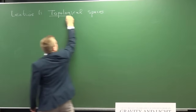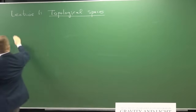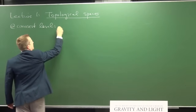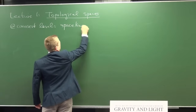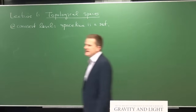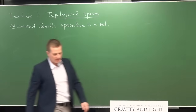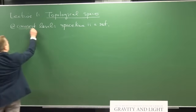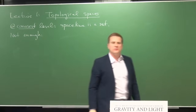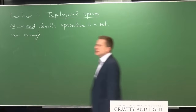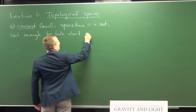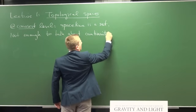So lecture one is topological spaces. We wish to talk about space-time and at the coarsest level — if we don't look very closely — space-time is a set, which means it just consists of points. However, this coarsest level is not enough to talk even about the simplest notions we would like to talk about in classical physics, namely continuity — continuity of maps.